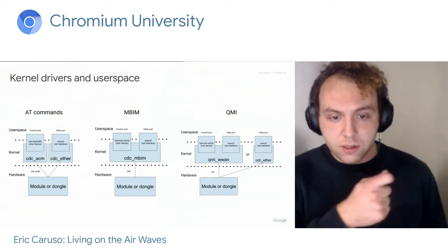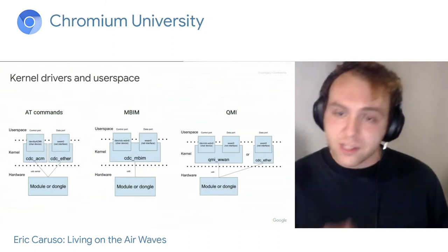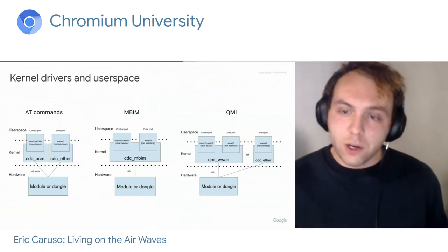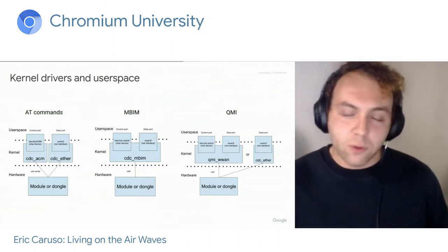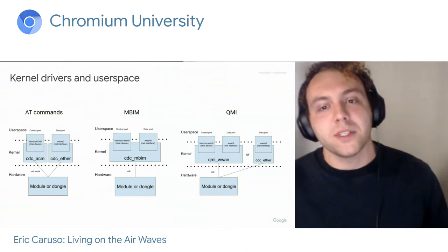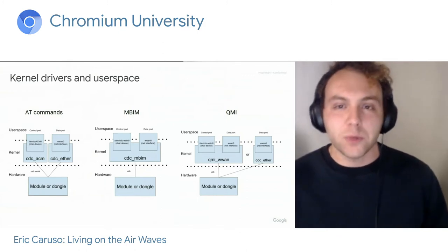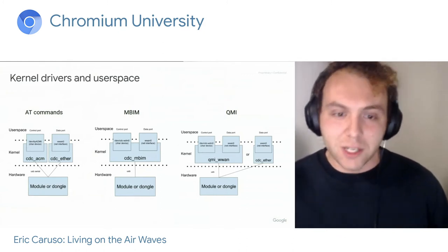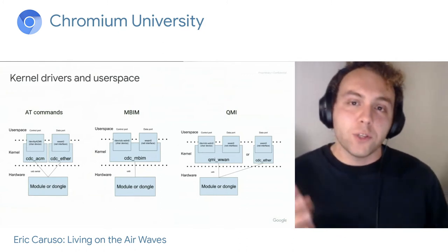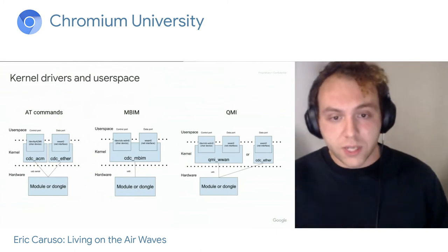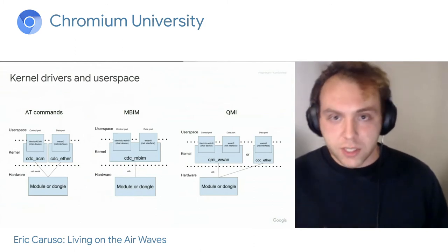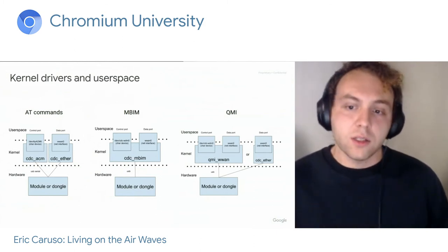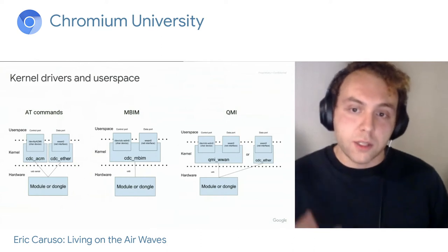You have to parse strings and figure out, 'oh, this has the same header as the message I sent before, so it's probably the right response.' Needless to say, we don't like that very much. So if you have a modem on a Chrome OS device, don't expect it to use AT commands — it's going to use either MBIM or QMI.